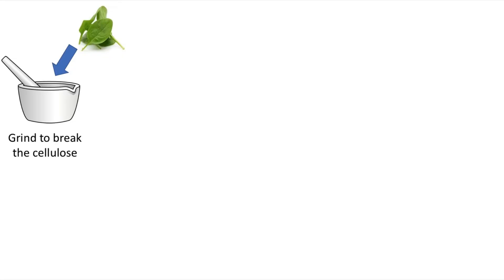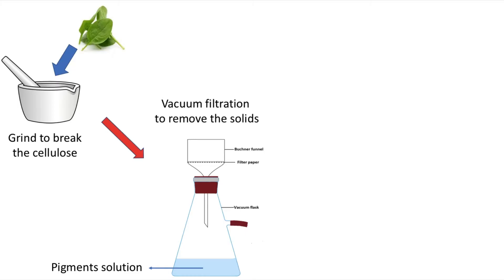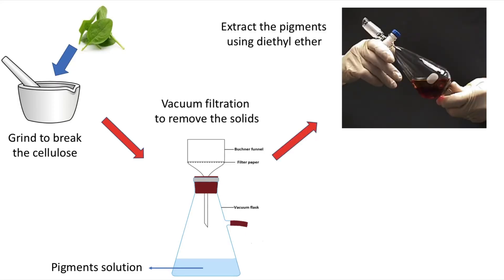The first part of the experiment is to isolate the pigments from the spinach leaves. The spinach leaves are ground using a mortar and pestle to release the pigments from the cellulose. It was ground with sand to help the process, and sodium sulfate anhydrous to absorb excess water from the leaves. The released pigments are dissolved in acetone, and then vacuum filtered to collect the filtrate and remove the solids.